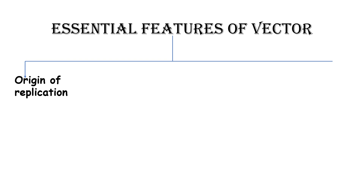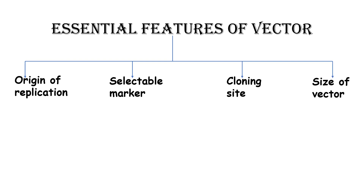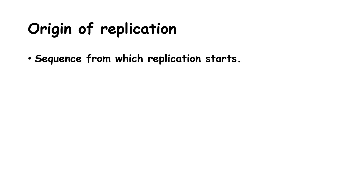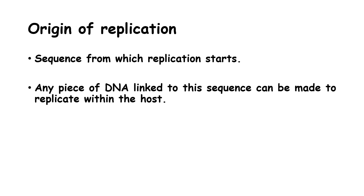Let us discuss the essential features of vectors, which are: origin of replication, selectable marker, cloning site, and size of vector. Origin of replication is the sequence from which replication starts. Any piece of DNA linked to this sequence can be made to replicate within the host.